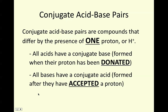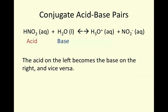Conjugate acid-base pairs just add on to this idea of identifying acids and bases. Conjugate acid-base pairs are compounds that differ by the presence of one proton. All acids have a conjugate base — formed when their proton has been donated — and all bases have a conjugate acid, formed when they have accepted their proton. In the reverse reaction, H3O+ donates its hydrogen back, acting like an acid, and the second product acts like our base.